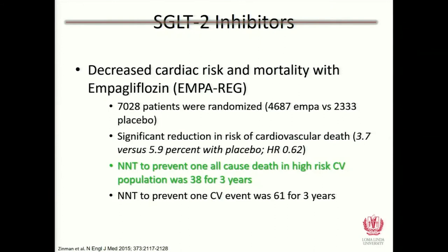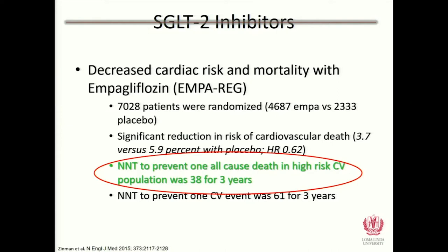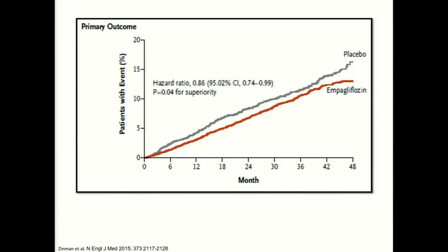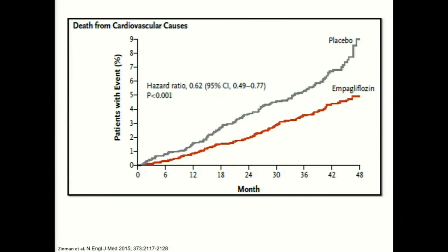Regarding cardiovascular risk reduction, the landmark EMPA-REG study with empagliflozin showed significant results. The number needed to treat over three years was 38 — a significant decrease in cardiovascular risk. Looking at the curves for primary outcomes, they start to diverge around three months, which is important. Death from cardiovascular causes also shows that curve significantly stretching apart at about three months — a significant decrease in cardiovascular death.